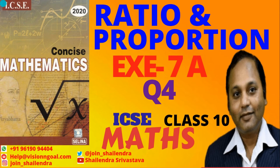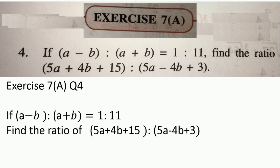Hello friends! In today's video we are going to cover Concise Mathematics Chapter Ratio and Proportion, Exercise 7A, Question Number 4. For the remaining questions I have already uploaded on YouTube — you can check the description for a complete lesson link and notes. The question says: if (a minus b) is to (a plus b) equals 1 is to 11, find the ratio of (5a + 4b + 15) to (5a − 4b + 3).